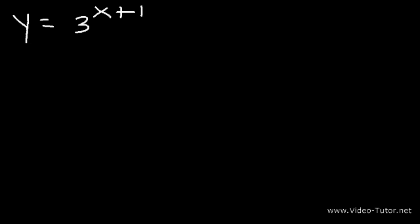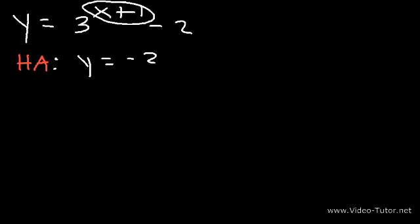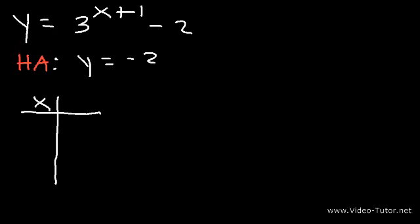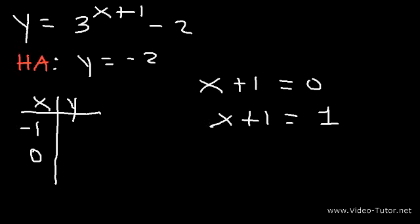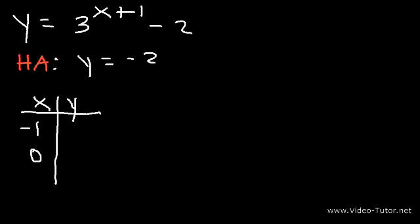Let's try another example: y is equal to 3 to the x plus 1, minus 2. The minus 2 tells you that the graph has been shifted down two units, so the horizontal asymptote is y equals negative 2. And x plus 1 tells you that the graph has been shifted one unit to the left. The standard x values to choose are 0 and 1, but shifted one unit left, we plug in negative 1 and 0 instead. To find those, set x plus 1 equal to 0 and 1, then solve for x to get negative 1 and 0.